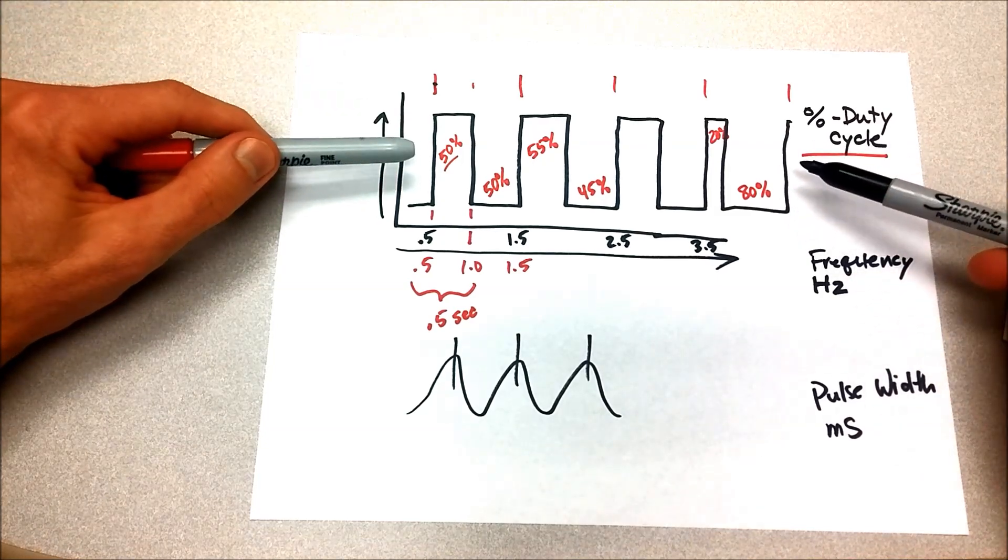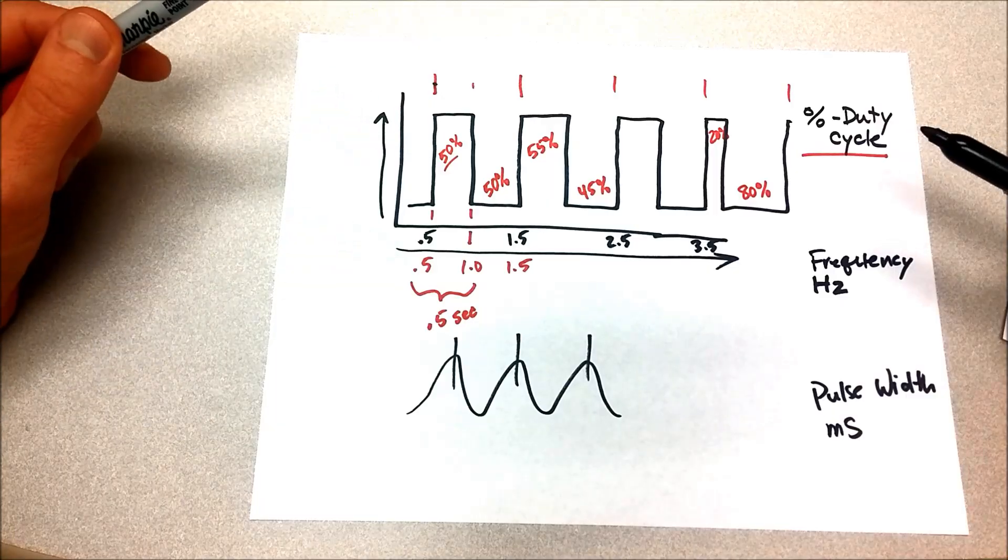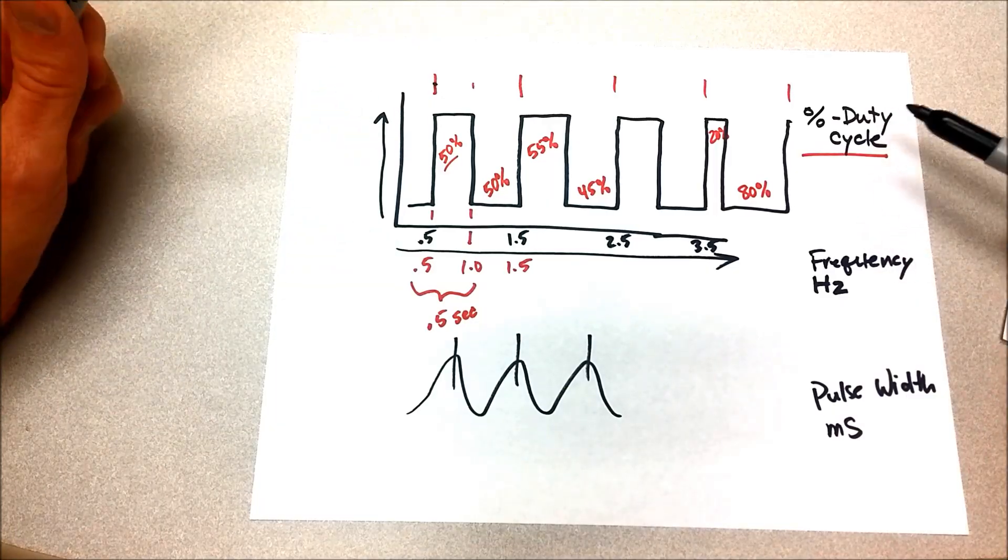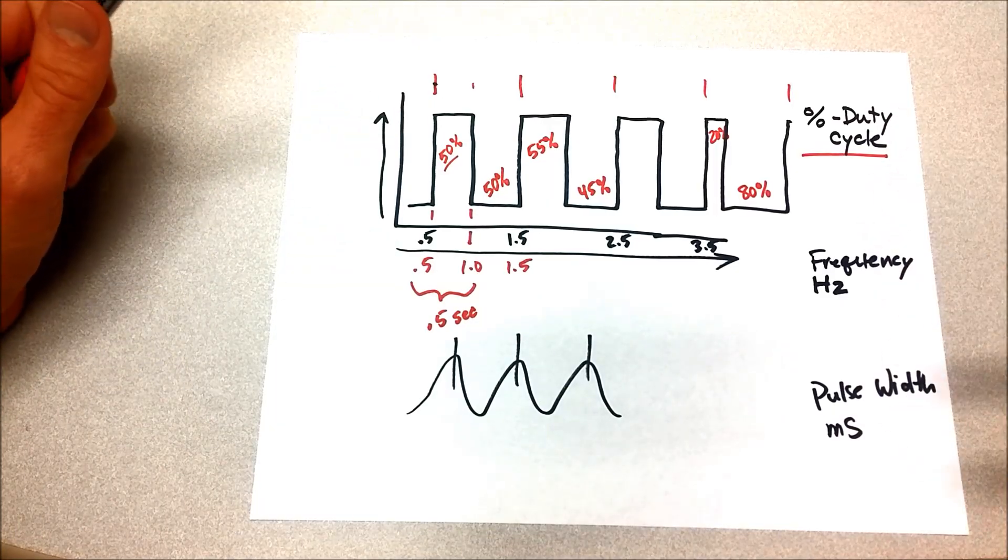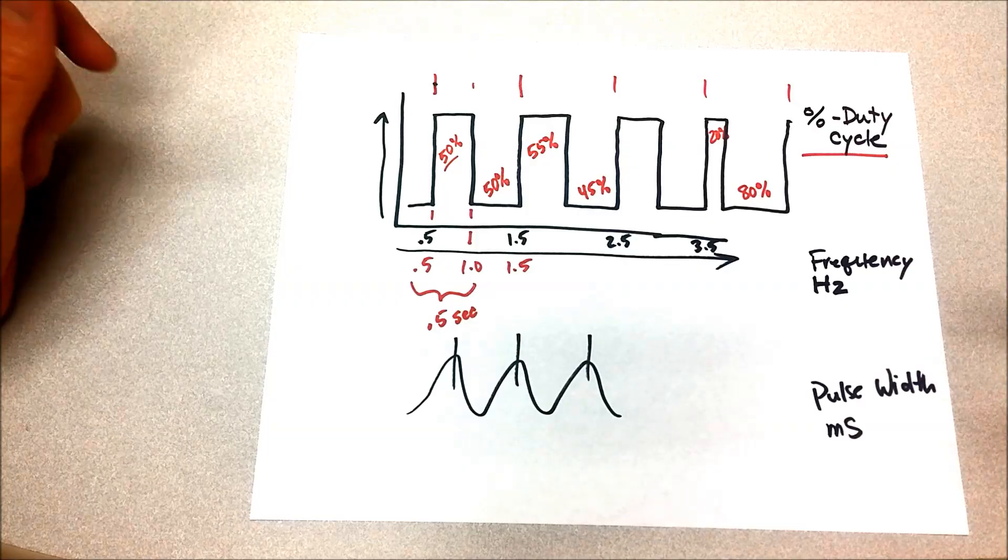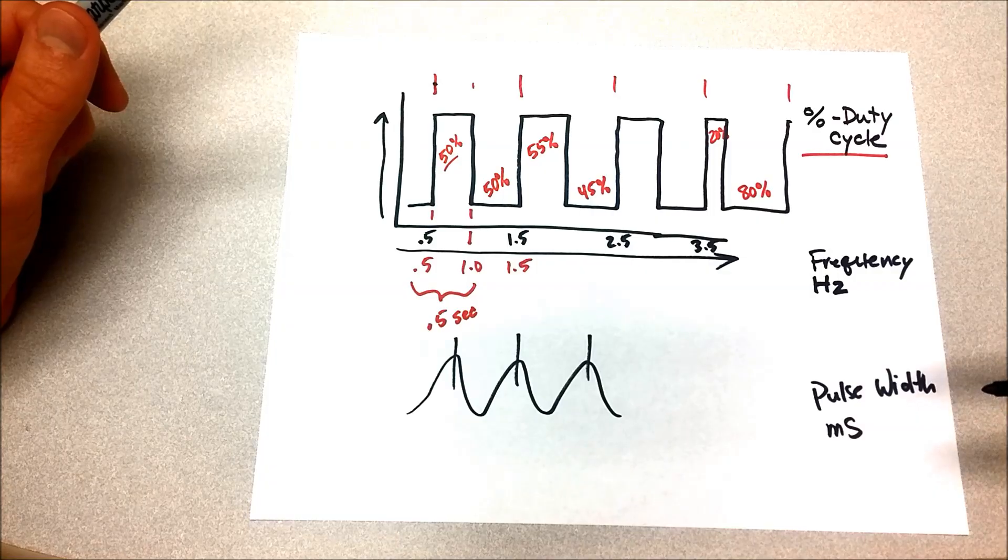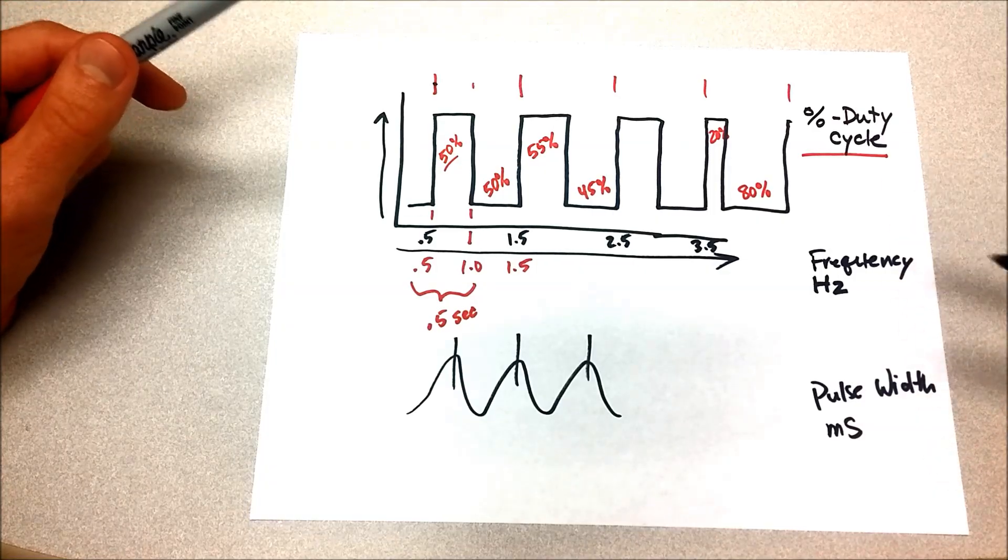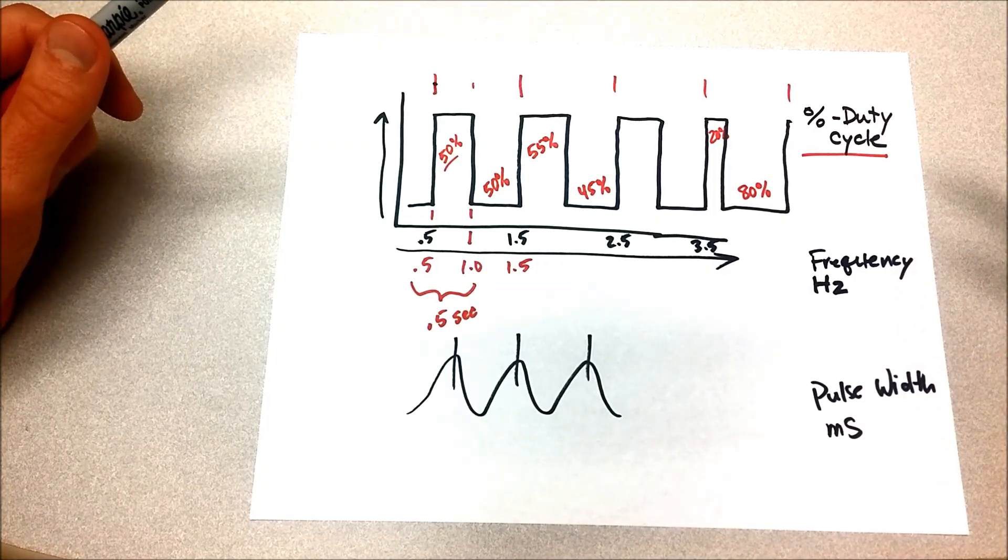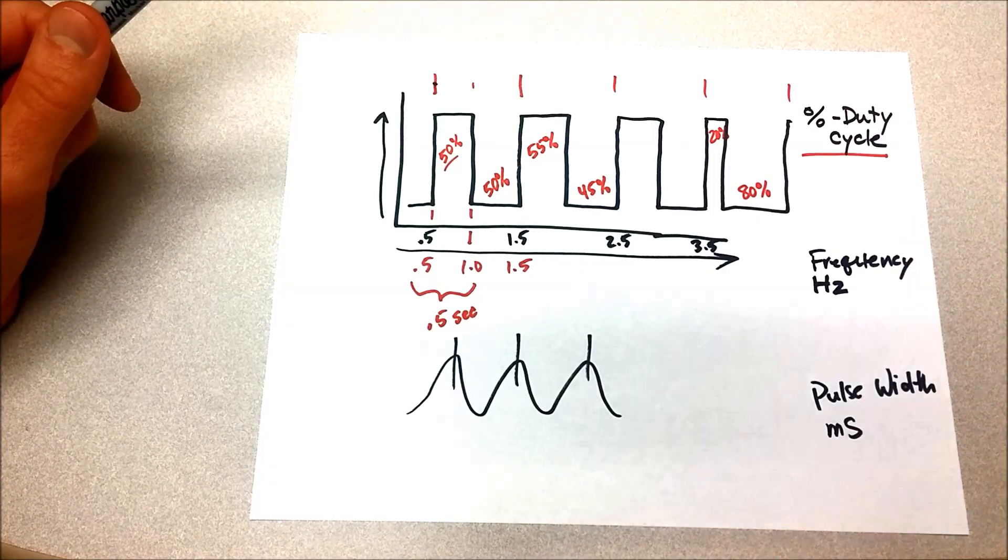As you can see, we took one signal and we measured it three different ways, and that's entirely possible. So the question really is, which of these three do we want to measure? Your typical multimeter or lab scope can measure any of these, or if not, you can take the measurements that you make and calculate these things.